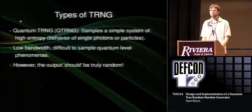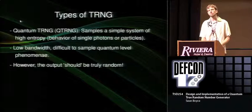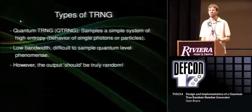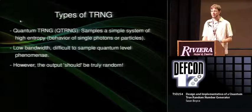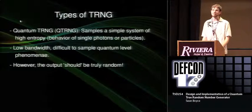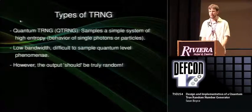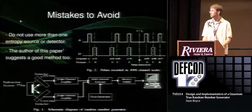With a quantum true random number generator, the main difference is that you've sampled a very simple system of high entropy, such as the behavior of single particles or photons. This is interesting specifically for a sealed radioactive source, because it has no inputs and still has outputs — making it very difficult to attack. These types of sources typically have low bandwidth because you don't want to deal with things that emit a lot of radiation, and it's also very difficult to detect subatomic particles or single photons using equipment you have around your house. However, if you overcome these obstacles, the output should be truly random.